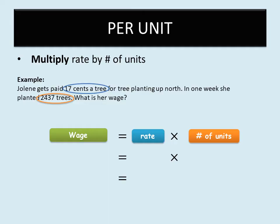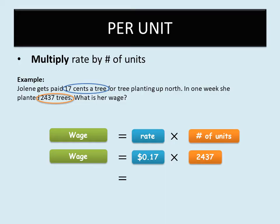Or the number of soap bars you make in an hour — a unit can be any quantity. In this example, the unit we're considering is the number of trees planted. So the rate is 17 cents and the number of units is 2,437. We multiply those and get $414.29. That means if she works one week planting 2,437 trees at 17 cents per tree, at the end of the week she will earn $414.29.